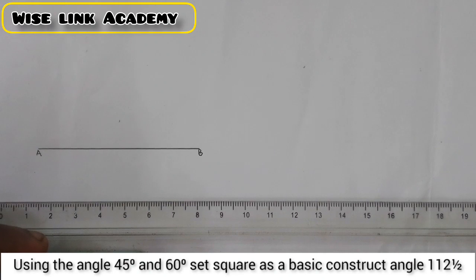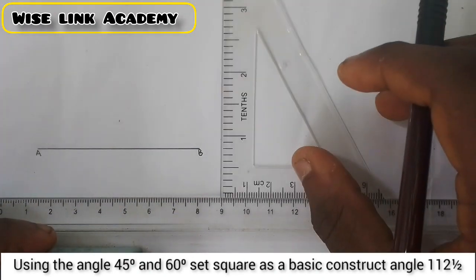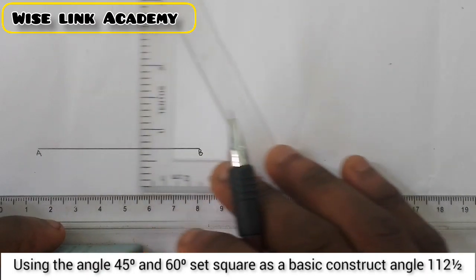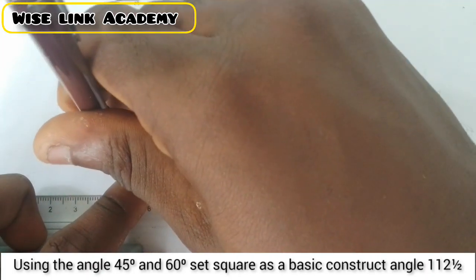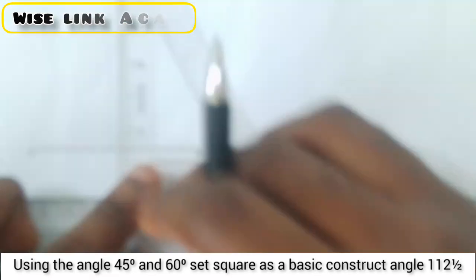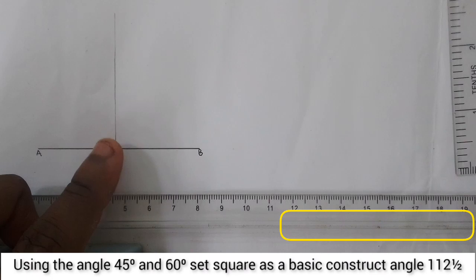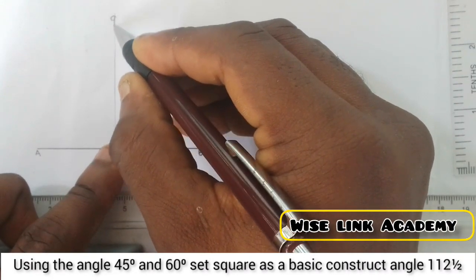So my next task now is to take my set square, place it anywhere on this line, draw a vertical line this way. So this vertical line is set with 90 degree.